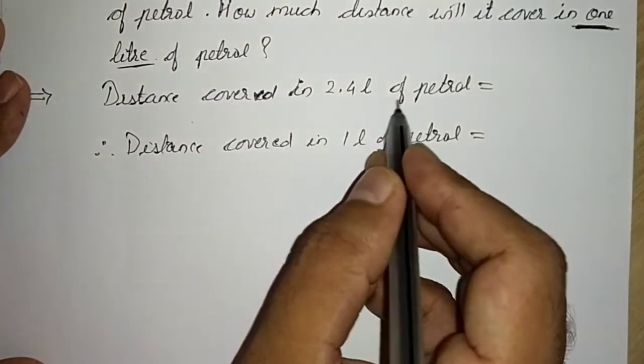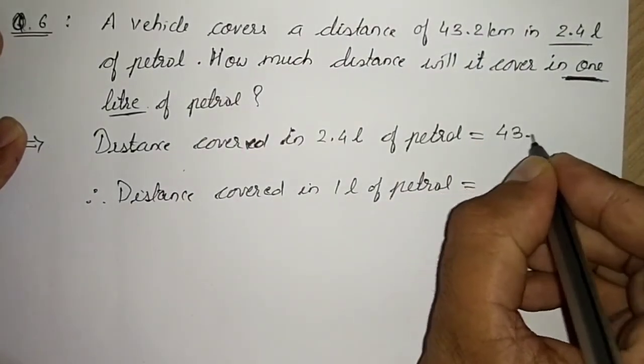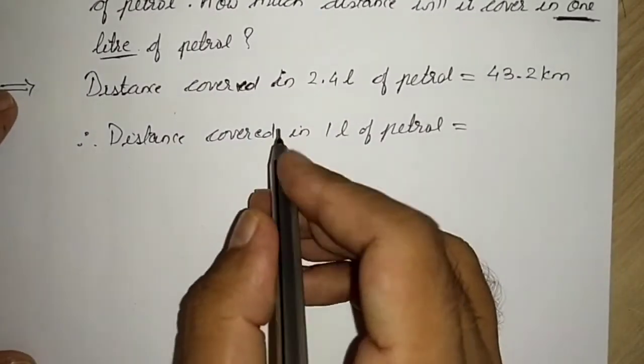So how we will write: distance covered in 2.4 liters of petrol is equal to 43.2 kilometers.